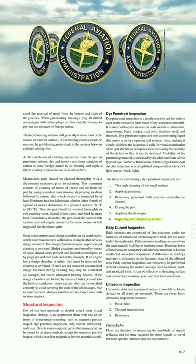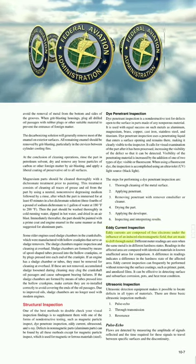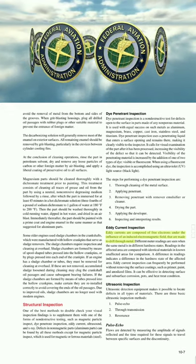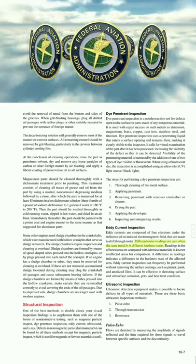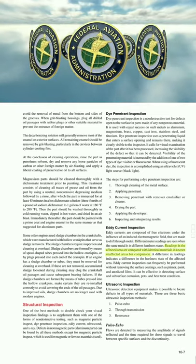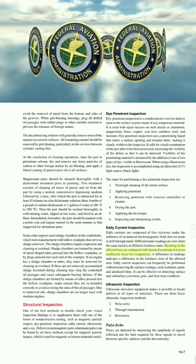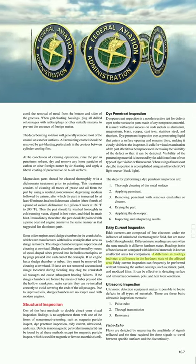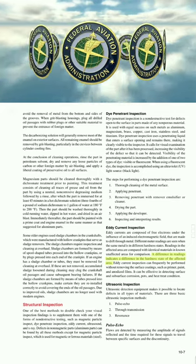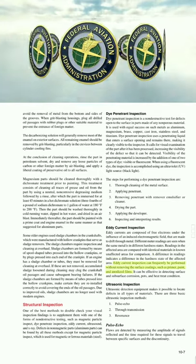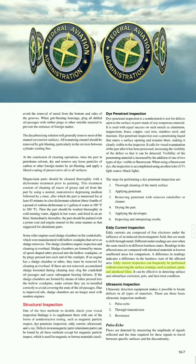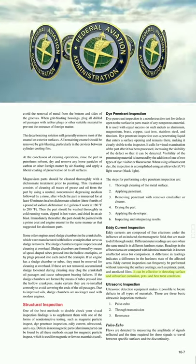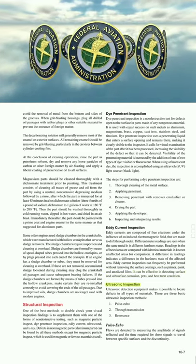Eddy-current inspection: Eddy currents are composed of free electrons under the influence of an induced electromagnetic field, made to drift through metal. Different meter readings are seen when the same metal is in different hardness states. Readings in the affected area are compared with identical materials in known unaffected areas. A difference in readings indicates a difference in the hardness state of the affected area. Eddy-current inspection can frequently be performed without removing surface coatings such as primer, paint, and anodized films. It can be effective in detecting surface and subsurface corrosion, voids, and heat-treat condition.